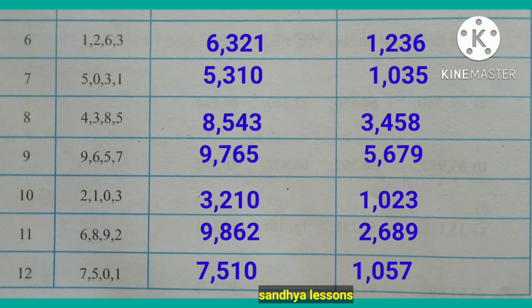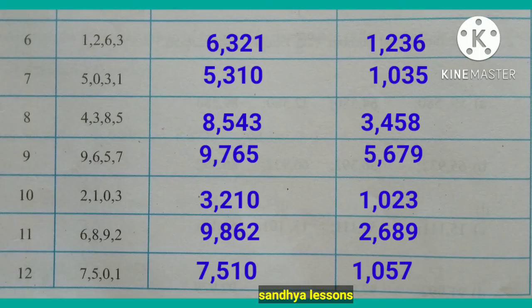With digits 1,2,6,3: largest 4-digit number is 6,321; smallest is 1,236. With digits 5,0,3,1: largest is 5,310; smallest is 1,035. With digits 4,3,8,5: largest is 8,543; smallest is 3,458. With digits 9,6,5,7: largest is 9,765; smallest is 5,679.